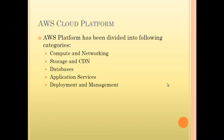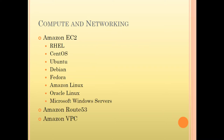Following that are Application Services, where we talk about notification services and email services. Last but not least, we have Deployment and Management, which covers how to deploy applications automatically and how to monitor your resources for various threshold values. In Compute and Networking, we have Amazon EC2, which supports most operating systems available today.